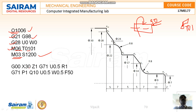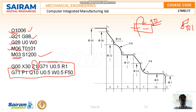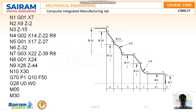Next we write G71, the multiple turning cycle. In the G71 syntax, U is the depth of cut per pass — for example 0.5 mm — and the retraction amount. The P and Q values define the starting block and ending block numbers. We bring the tool to X7 (diameter 7) at the first point, then it goes Z minus 2 to reach X9.